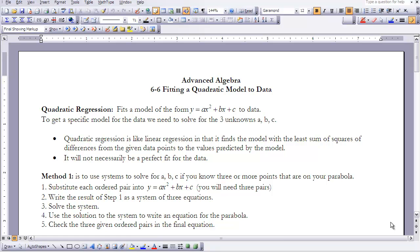To get a specific model for the data, we need to solve for three unknowns a, b, and c. Quadratic regression is like linear regression in that it finds the model with the least sum of squares of differences from the given data points to the values predicted by the model.